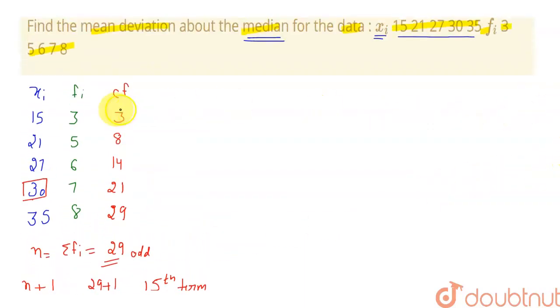Now, what I need to do? I need to first calculate x_i minus M. Because we are calculating mean deviation about median. So we have to calculate this value first. M we have found to be 30.